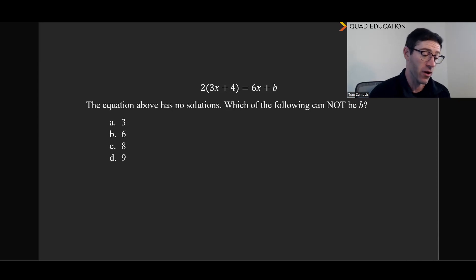The equation above has no solutions, and so when we see no solutions, that must mean parallel lines, which the following cannot be the value of b. And what we have here is 2 times 3x plus 4 equals 6x plus b. And so what we need to find is, first of all, we need to distribute this 2 out so that we can have 6x plus 8 equals 6x plus what? And if we think about these in terms of a line, we know that for parallel lines, they must have the same slope but a different intercept.